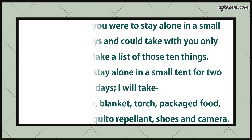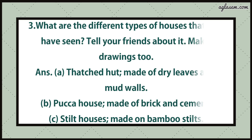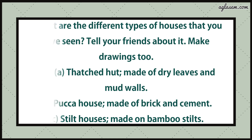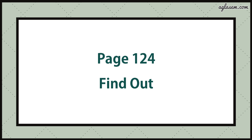Question number three says: what are the different types of houses that you have seen? Tell your friends about it and make a drawing. Answer: I have seen different types of houses at different places — first, a hut made of dry leaves and mud walls; second, a pakka house made of bricks and cement; third, stilt houses made of bamboo stilts.